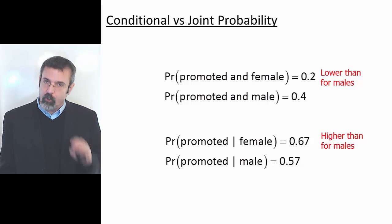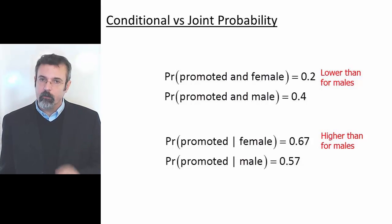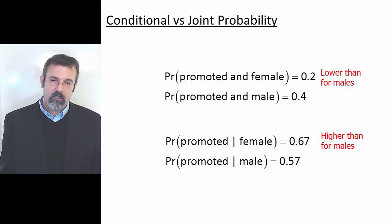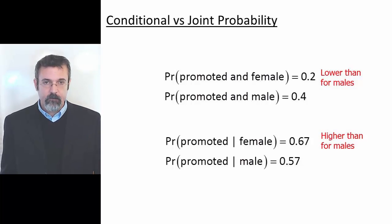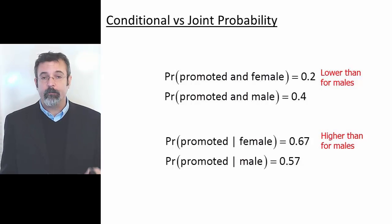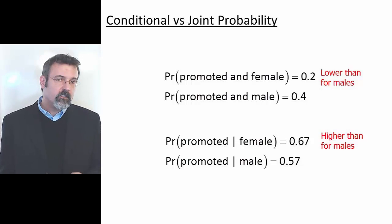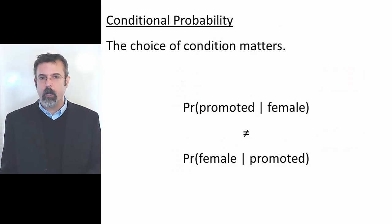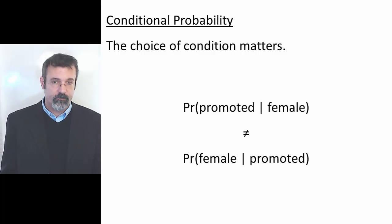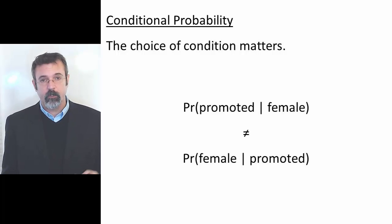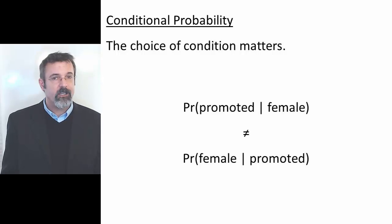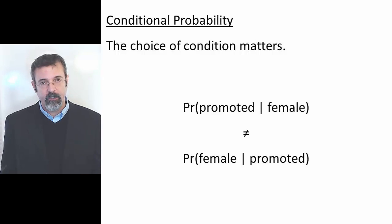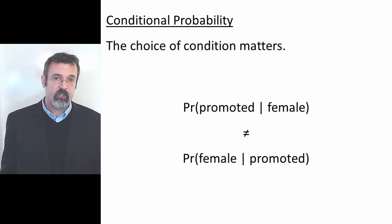In this example, the joint probability of being promoted and female is relatively low, not because females are being promoted at a lesser rate than males, but rather because there are fewer females on the police force to begin with. Unlike the disjoint and joint probabilities, conditional probabilities are not reflexive. The probability of being promoted given that you are female is not the same as the probability of being female given that you are promoted.